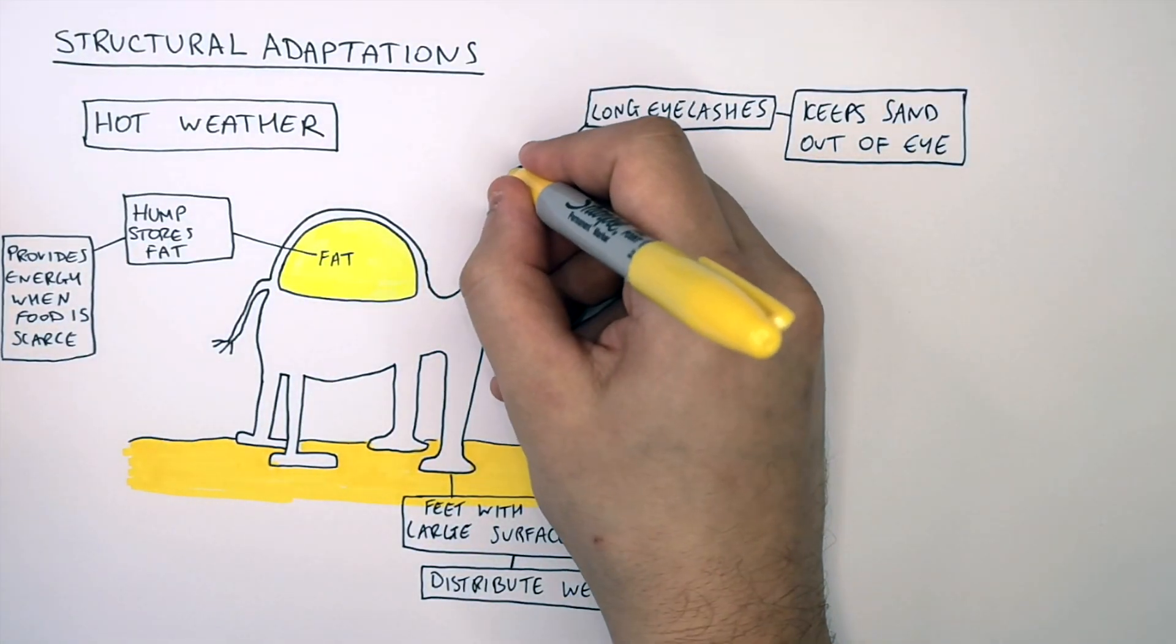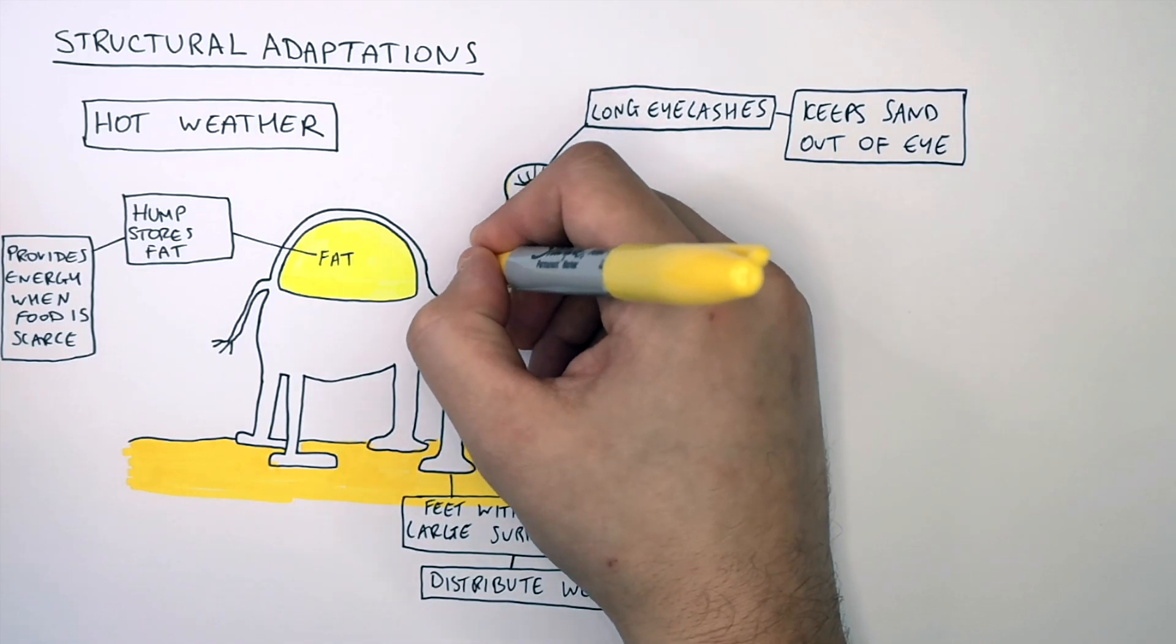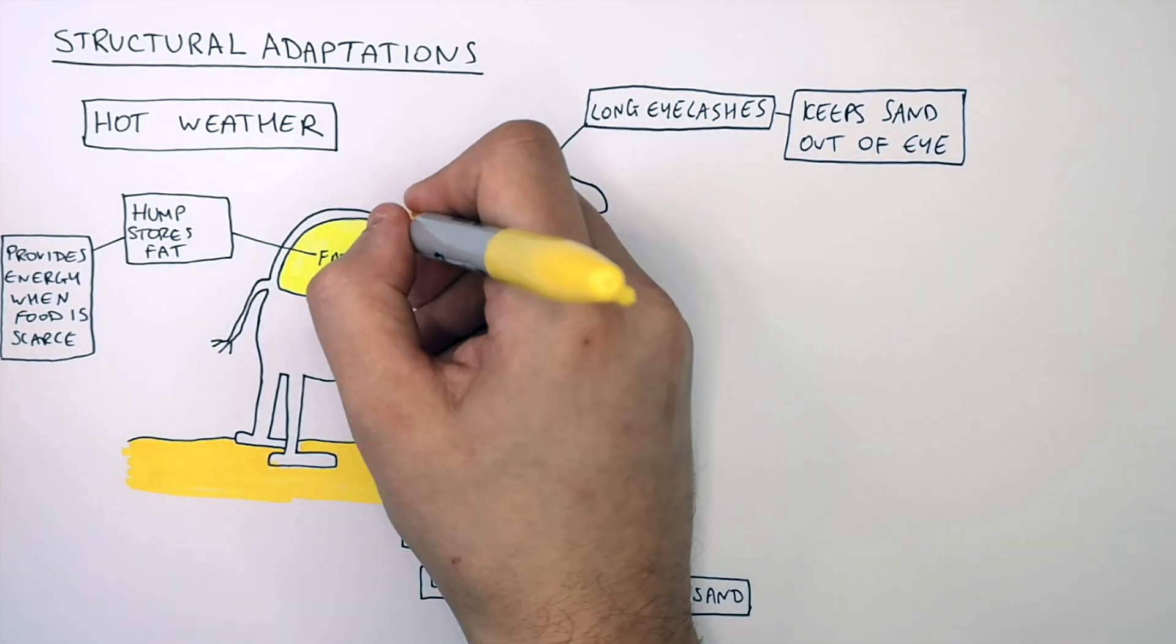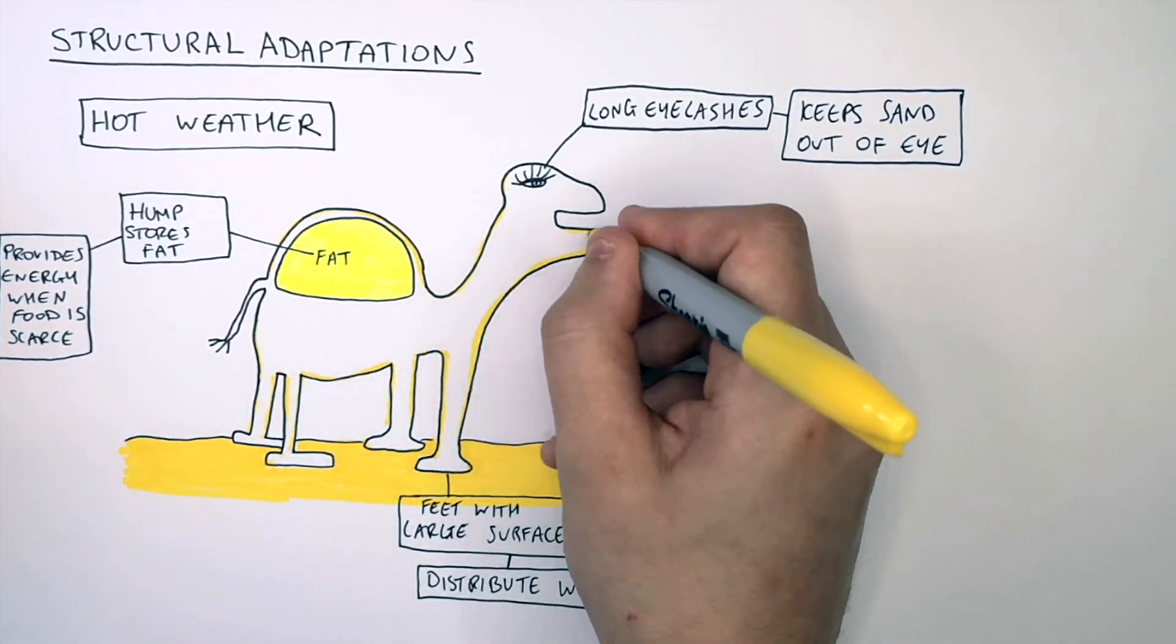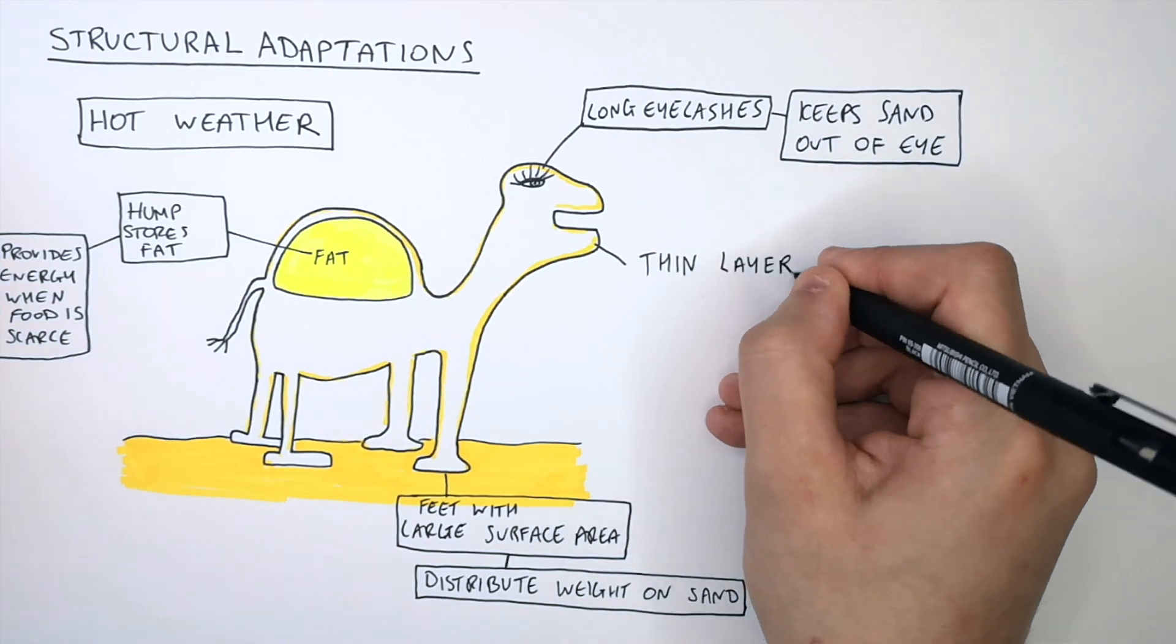The desert is an incredibly hot environment with temperatures that can get up to 50 degrees. So camels do not need a thick layer of fat. They have a thin layer of fat.